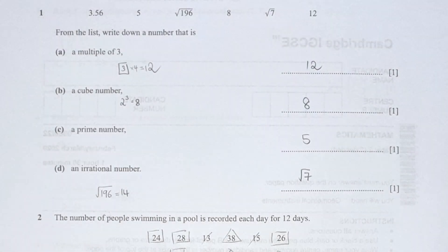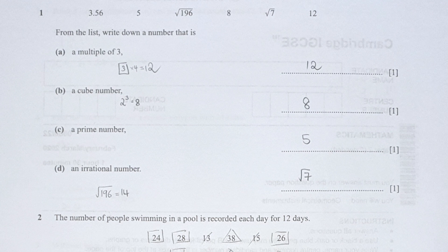For the first question, finding a multiple of three from the list, I trace it through the multiplication table. Only 12 qualifies as a multiple of 3.